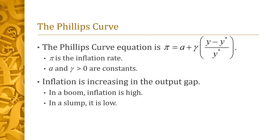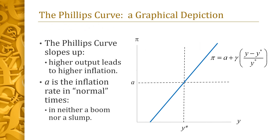We also have the tools we need to give an equation for the Phillips curve. Let gamma be a positive constant. The Phillips curve equation states that inflation pi equals a constant little a plus gamma times the output gap. Since gamma is positive, inflation tends to be higher in booms than in slumps. This captures Bill Phillips' observation that inflation is high when unemployment is low. The Phillips curve is depicted on the graph: output appears on the horizontal axis, inflation on the vertical one. The vertical dashed line equals potential output Y*. The blue line is the upward-sloping Phillips curve, meaning that an increase in output is associated with higher inflation. When output Y equals potential output Y*, the output gap is zero, so inflation pi equals the constant little a.